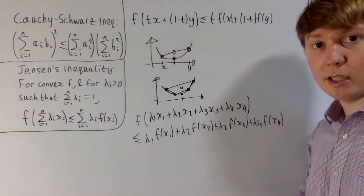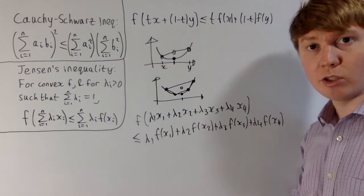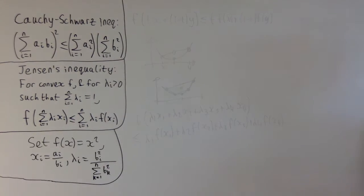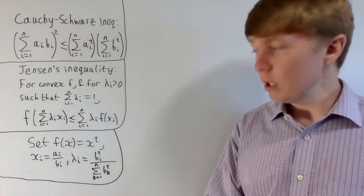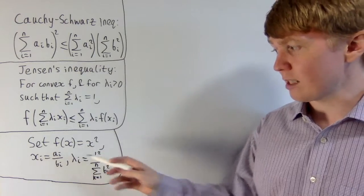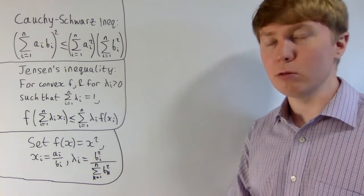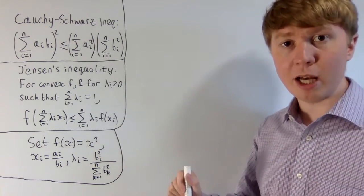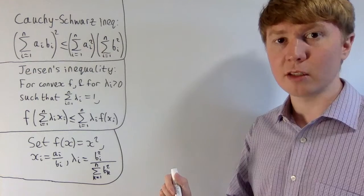Now we've got an idea of where this form of Jensen's inequality comes from, and we can use it to prove the Cauchy-Schwarz inequality. This is a really satisfying proof — it's just a matter of making a clever choice of our function f and our xᵢ's and λᵢ's, and then the result pops out. We choose f(x) = x², which you can easily check satisfies the definition of a convex function.